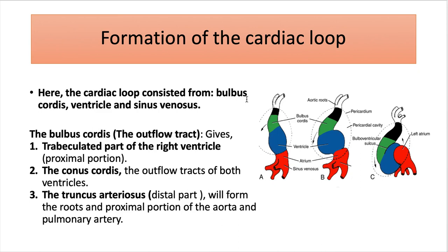The cardiac loop consists of the bulbus cordis, ventricle, and the sinus venosus, as shown in the picture. The bulbus cordis, or outflow tract, gives rise to: the proximal portion — the trabeculated part of the right ventricle; the conus cordis, which will form the outflow tract of both ventricles; and the truncus arteriosus, the distal part of the bulbus cordis, which will form the roots and the proximal portion of the aorta and the pulmonary artery.